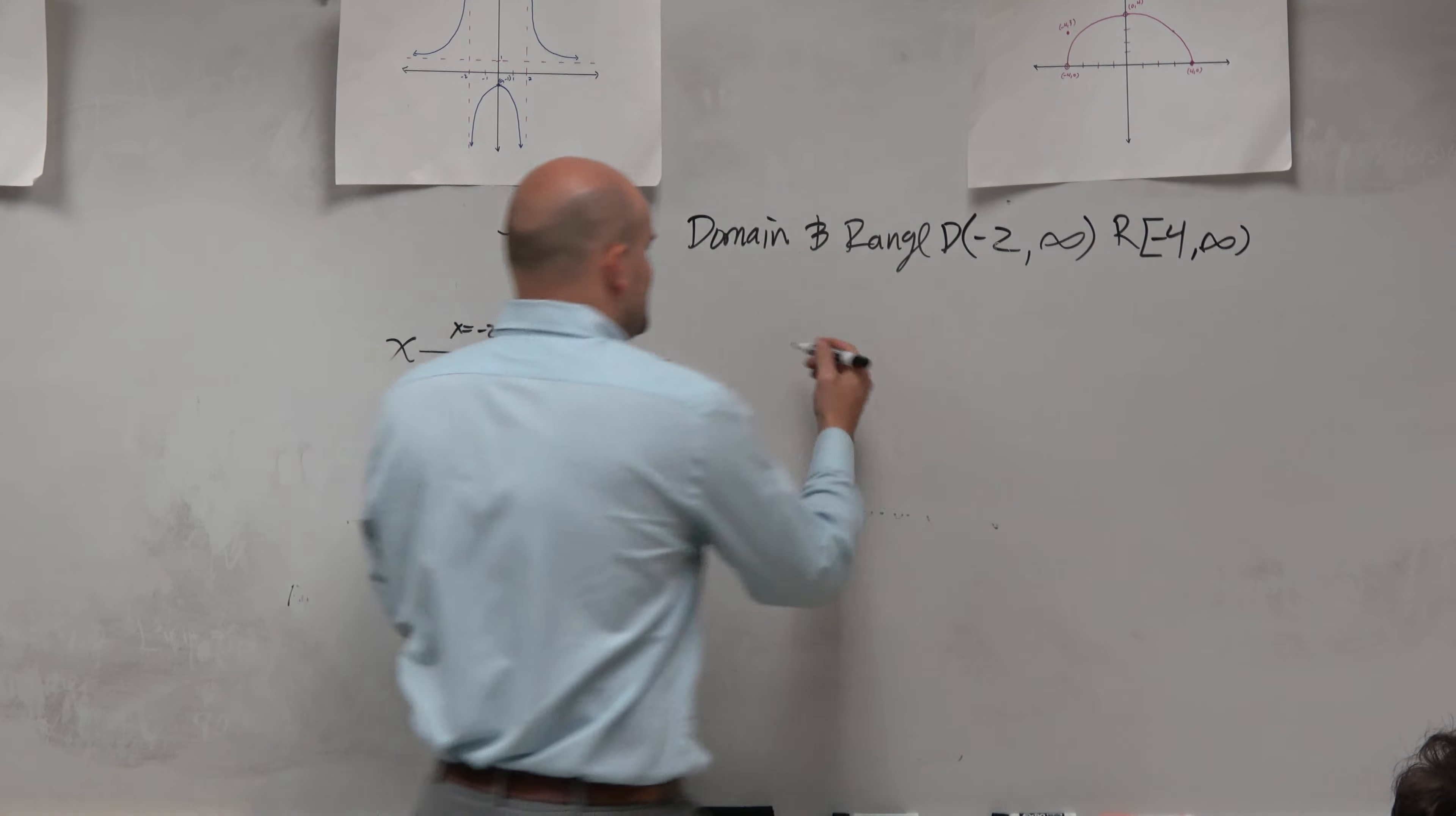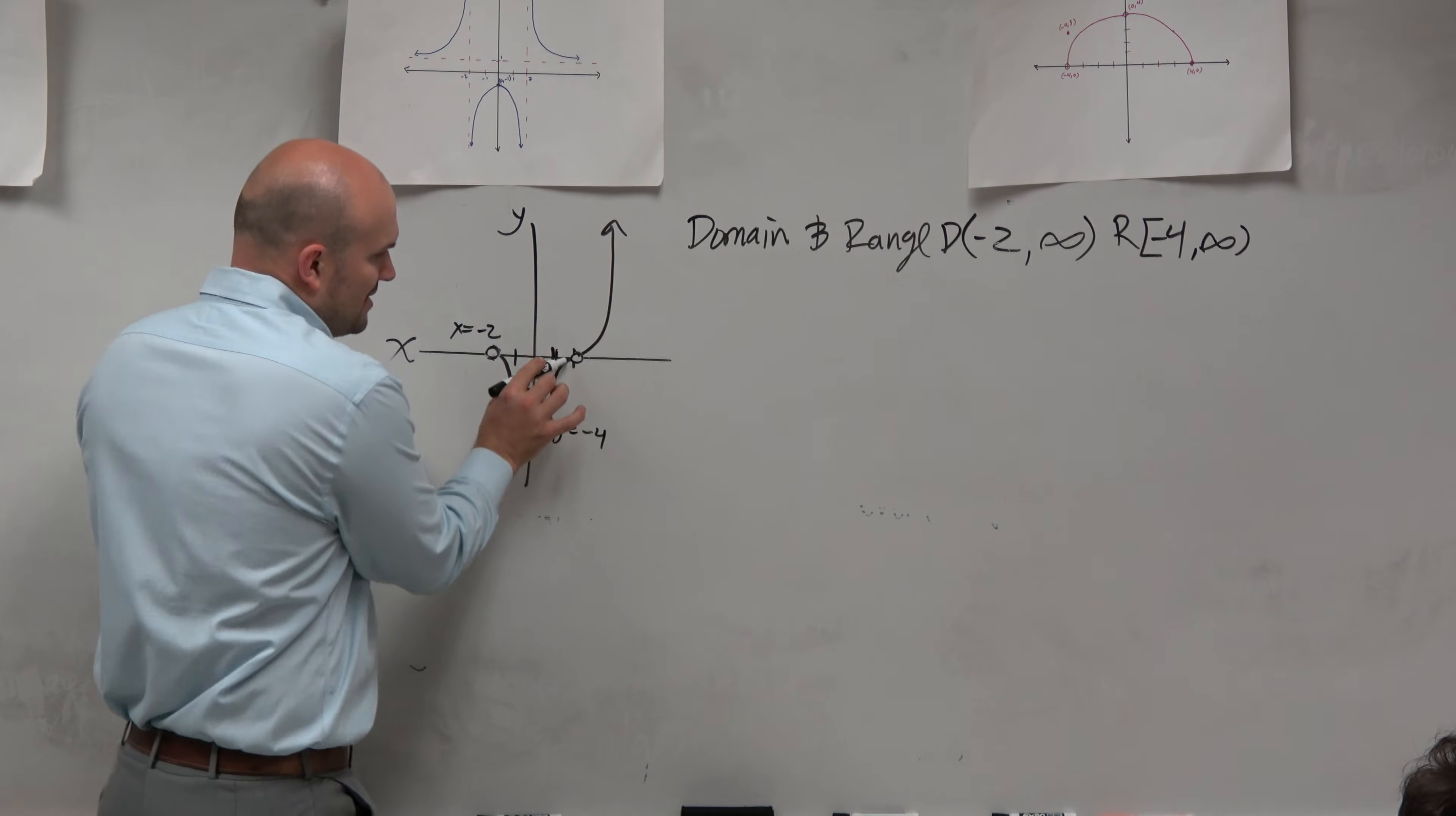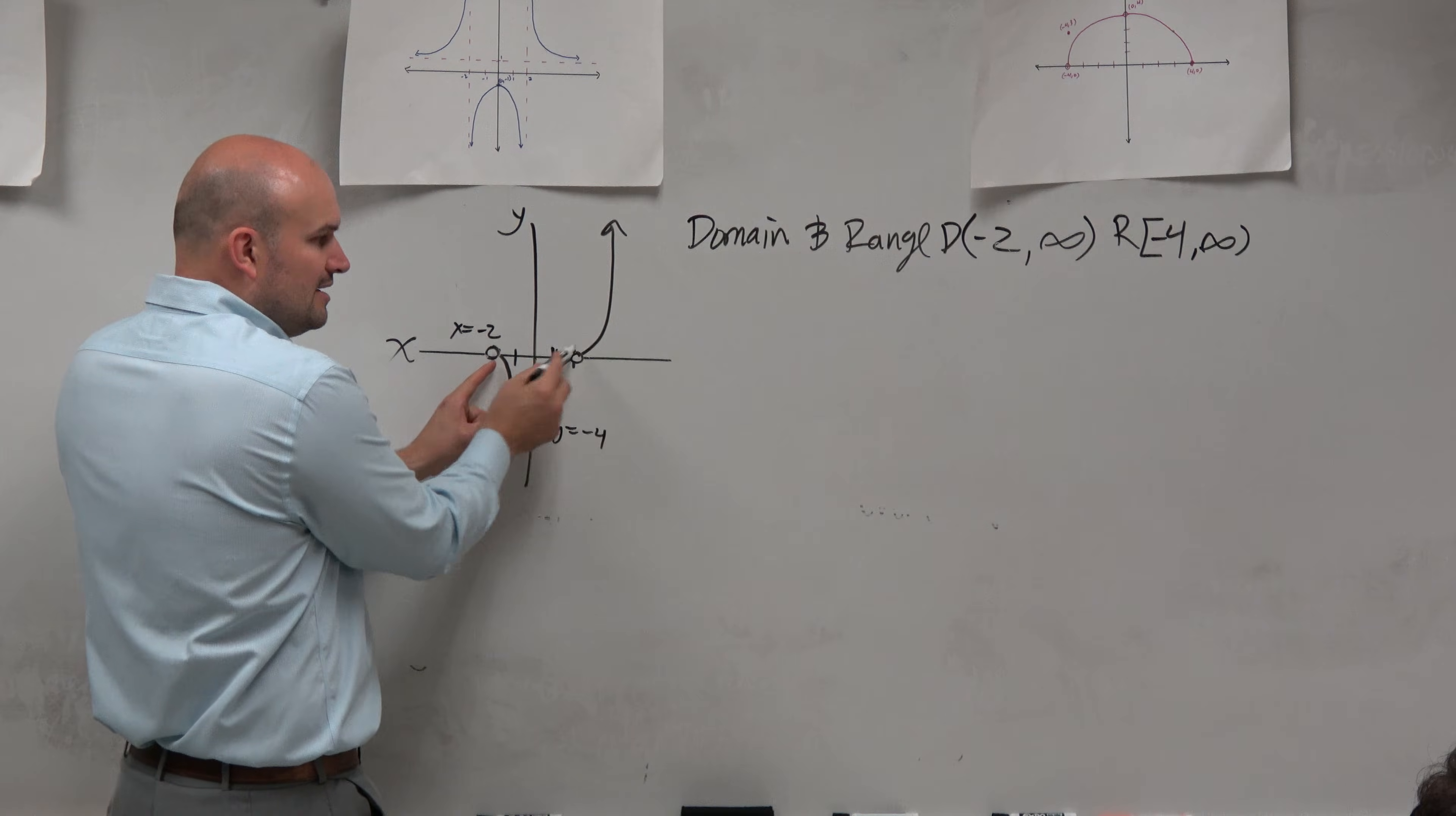So now, we can't say negative 2 to infinity because now 2 is not included. So what we would have to do, and again, I'm trying to teach to give, I'm only going over one example. But I'm trying to at least make sure you guys are aware of the other examples.